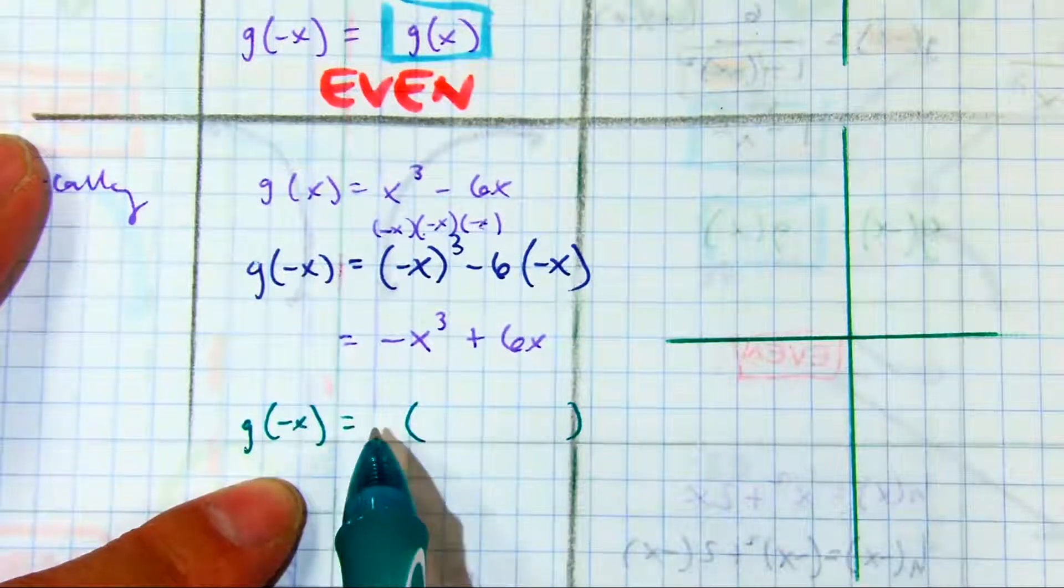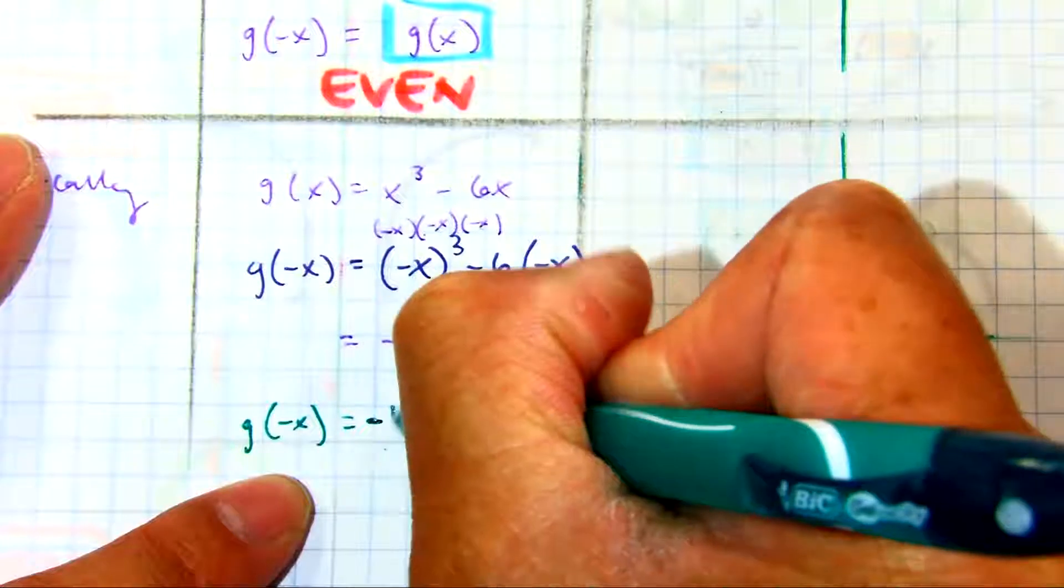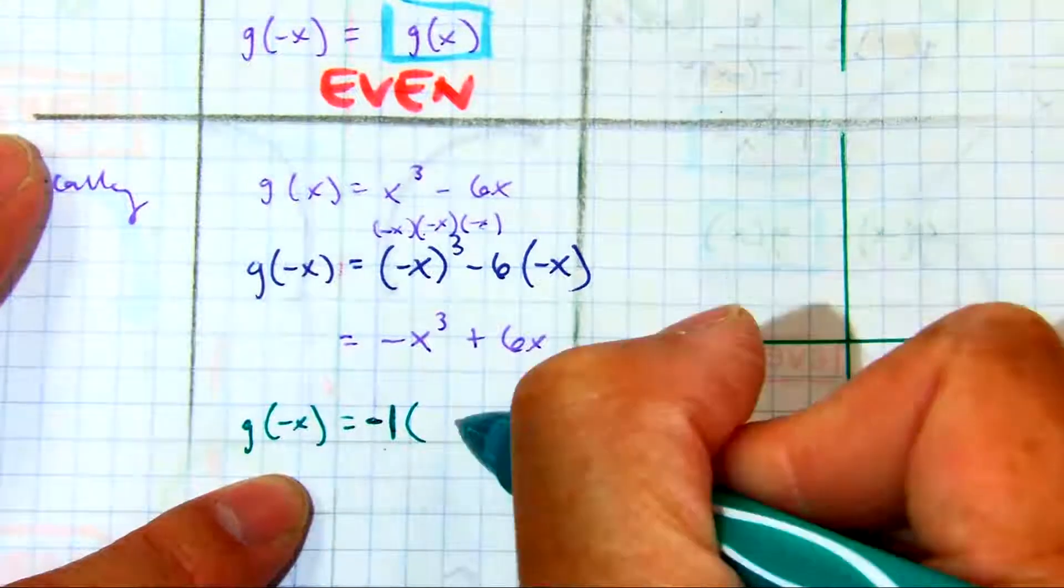Yeah, you put the negative outside. Negative or negative one, right. Okay, what goes on the inside? Negative x cubed.